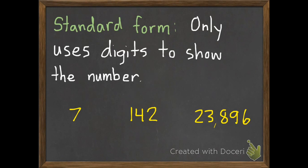We have 7,142 and 23,896. All of those examples are in standard form. They only use digits.